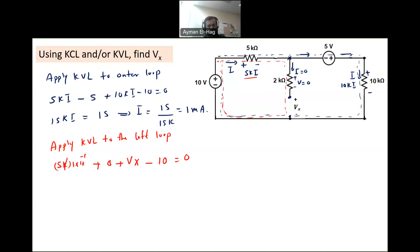Now, K will cancel with 10 minus 3. So this becomes 5 plus Vx minus 10 equal to zero. And from this, you can say that Vx is equal to five, five volt.